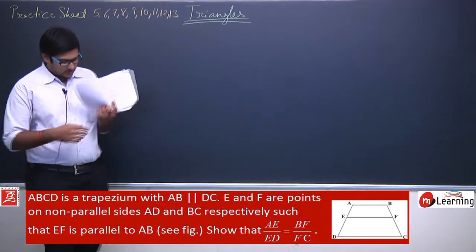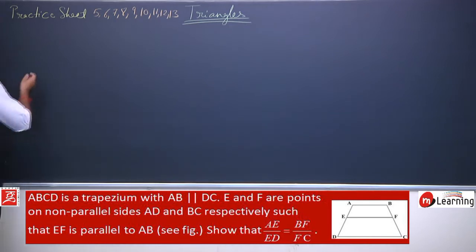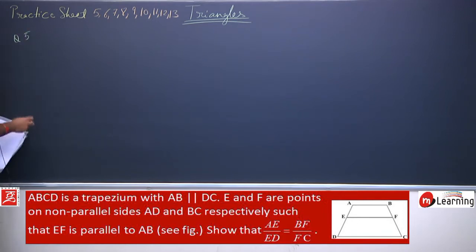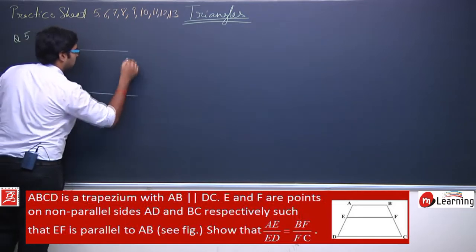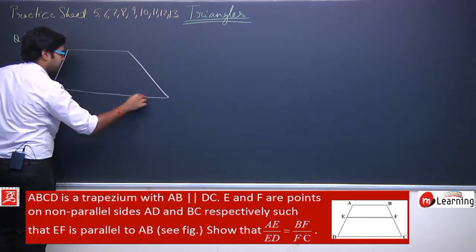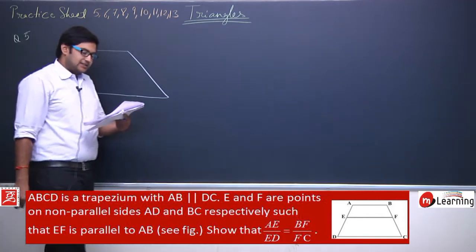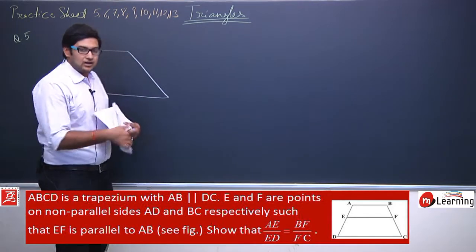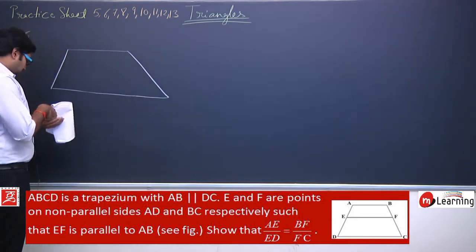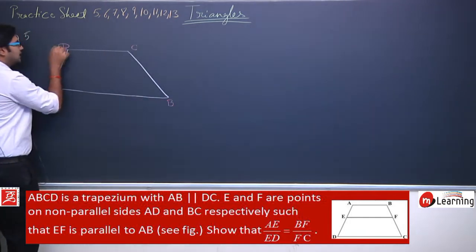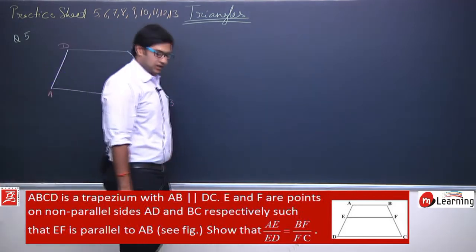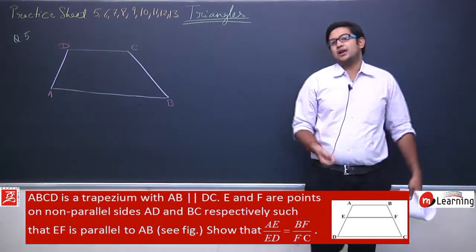Let us first draw the diagram for this question. ABCD is a trapezium where AB is parallel to DC. We label the vertices A, B, C, and D.